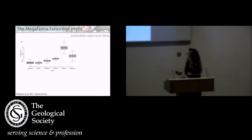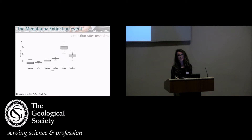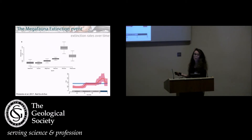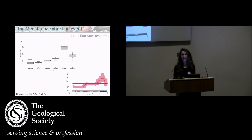We found that extinction rates of the Pliocene were three times higher than the mean Cenozoic value, and actually significantly higher than any other epoch for marine megafauna. When we look at this on a continuous time scale, we found that it was the late Pliocene where extinction rates were the highest.